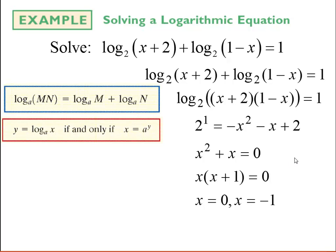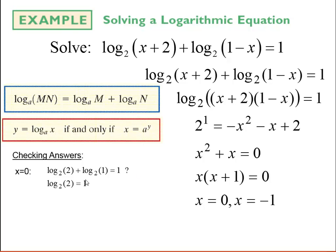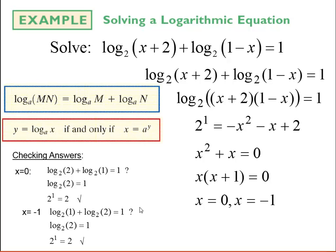I really need to check here. Plugging x equals 0 in gives log of 2 and log of 1; combining gives log of 2 times 1, and rewriting in exponential form: 2 to the 1 equals 2 — that works. Plugging in x equals negative 1: negative 1 plus 2 is log of 1, and 1 minus negative 1 is 2, giving the same equation as before. So in this case, both x equals 0 and x equals negative 1 are valid solutions.